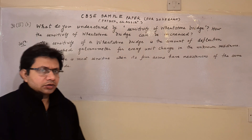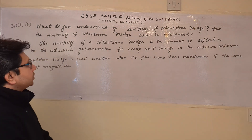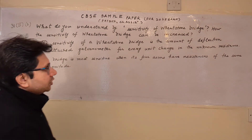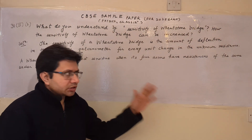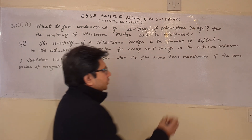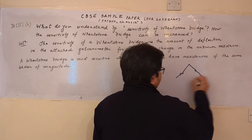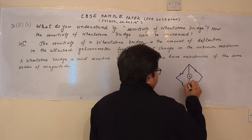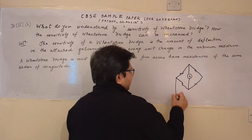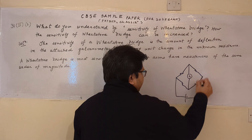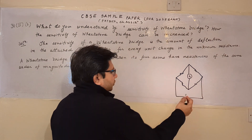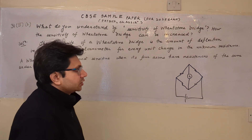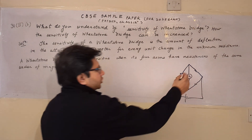Hello students. The question is: what do we understand by sensitivity of the Wheatstone bridge, and how can the sensitivity of the Wheatstone bridge be increased? The Wheatstone bridge is an arrangement consisting of four resistors in a bridge manner. There is a galvanometer to detect deflection, and a battery for energizing the bridge. Generally, the Wheatstone bridge is used to find out the value of an unknown resistance.